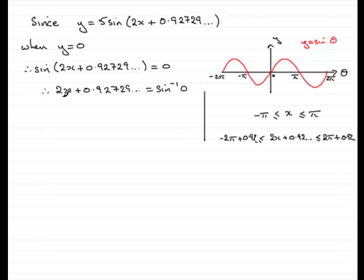So what does this mean? Well, it means that as far as this angle goes, 2x plus 0.92729 and so on, well, it's going to be equal to the inverse sine of 0. But it means that the angles that are going to be in range, well, it won't be that minus 2 pi because minus 2 pi plus 0.92729, etc. is going to be a little bit further on from here.